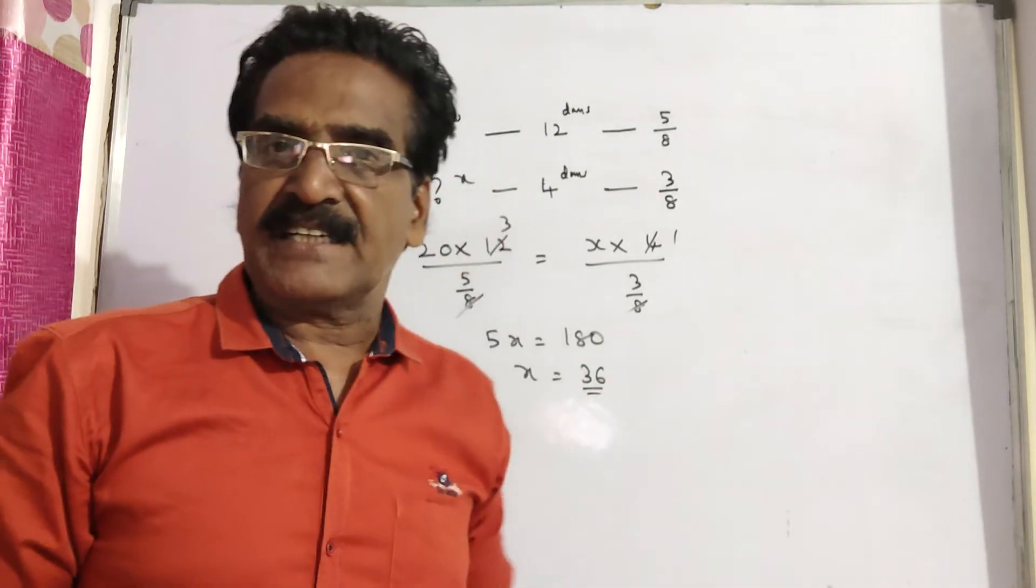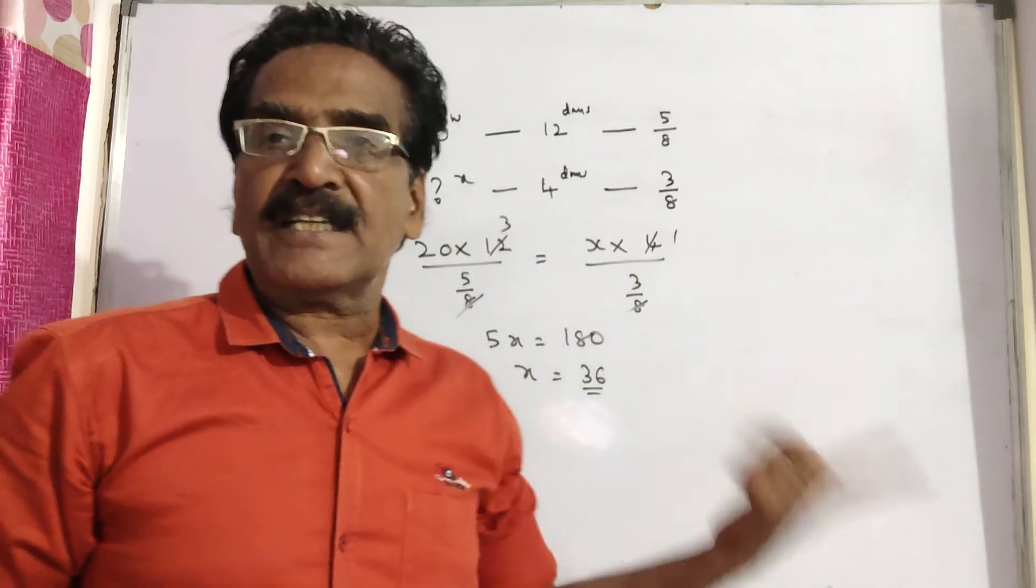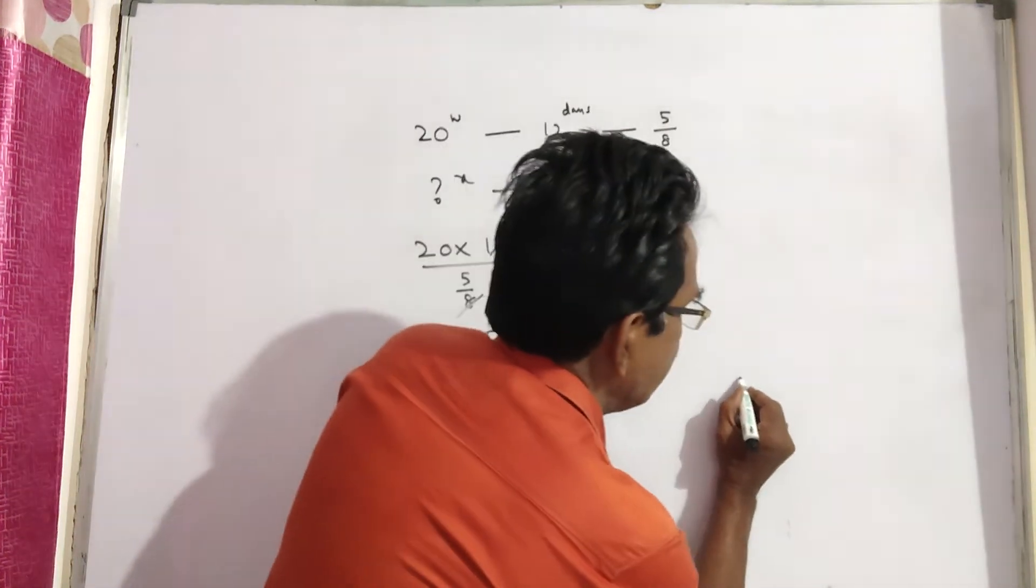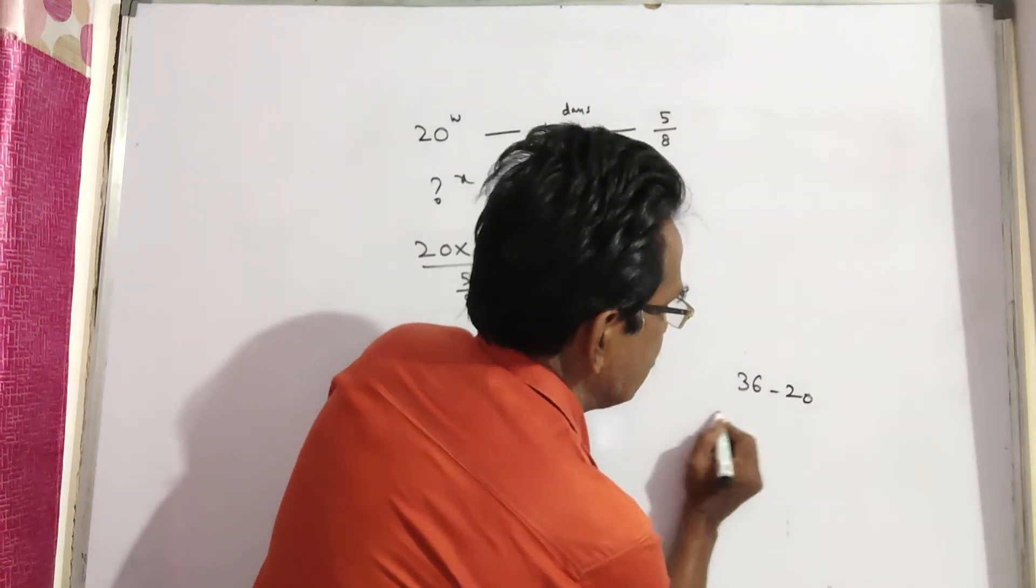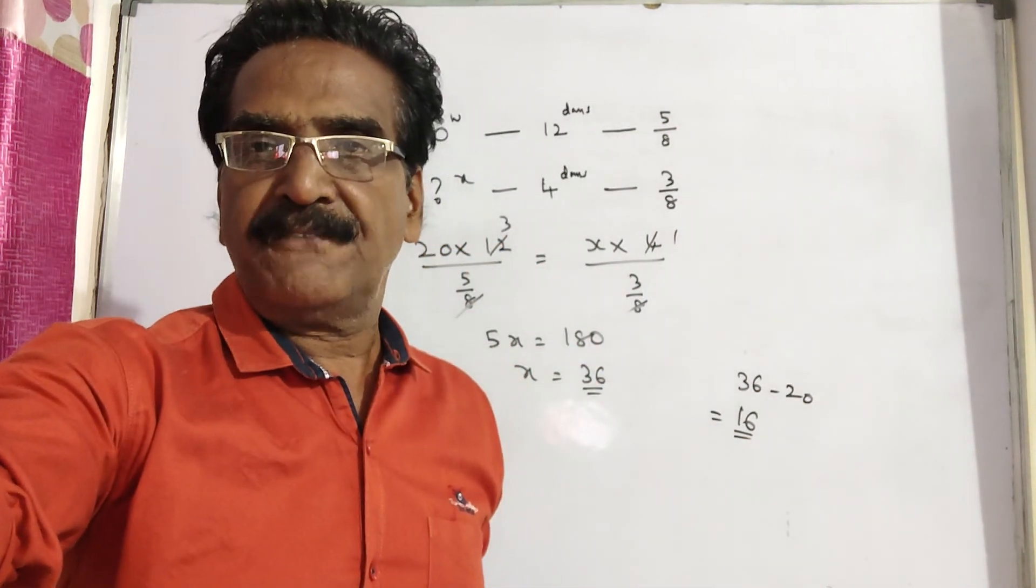But we have only 20 workers, so how many more are needed? 36 minus 20 equals 16 workers we have to employ more. Okay friends?